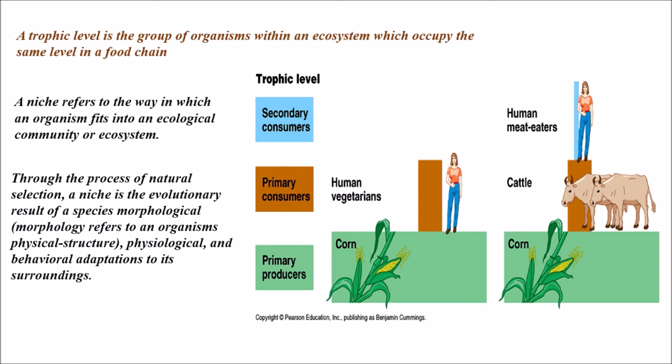Through the process of natural selection, a niche is the evolutionary result of a species' morphological, physiological, and behavioral adaptations to its surroundings. Morphology refers to the organism's physical structure which we can observe. That is about trophic level and niche. In my next class we will discuss about types of pyramids. Thank you.